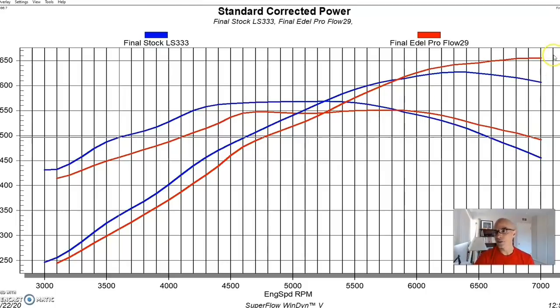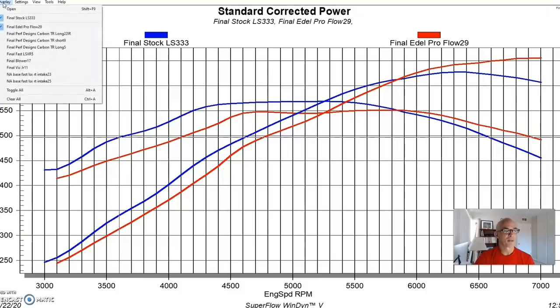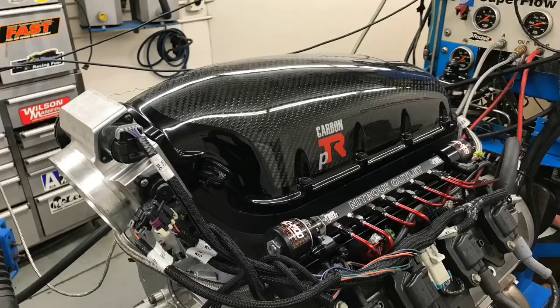It just depends on where you want your power. If you're going to run this thing to 8000 RPM, run it from 6 to 8000, then a short runner manifold like the Pro Flow is probably a good idea. If it's more of a street motor, the factory LS3 makes more power all the way up to 6000, might be a better choice. That's up to you guys.